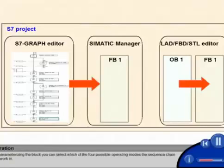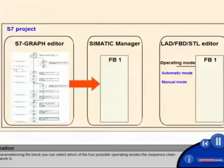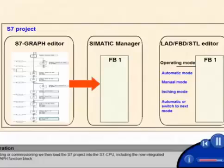When parameterizing the block, you can select which of the four possible operating modes the sequence chain should work in. For testing or commissioning, we then load the S7 project into the S7 CPU, including the now integrated S7 graph function block.